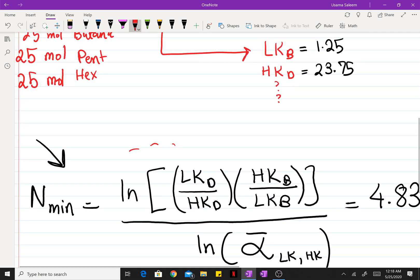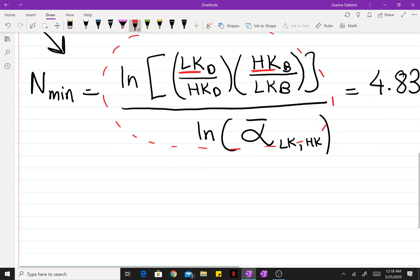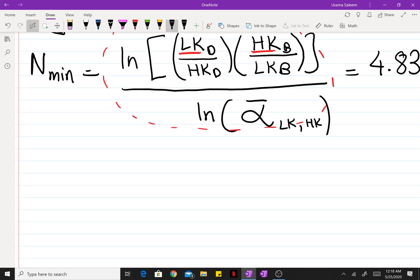Now, the Fenske equation here is defined in terms of the light key and the heavy key flow rates in the distillate and the bottom. Now, let's rewrite the Fenske equation in a much more general form. The minimum number of stages is going to be equal to the natural log of the flow rates in the distillate.